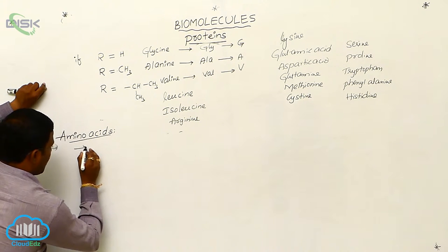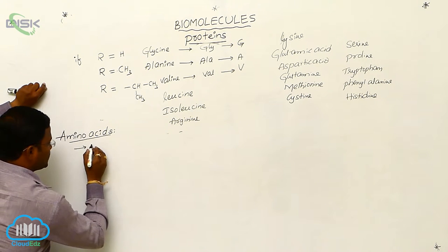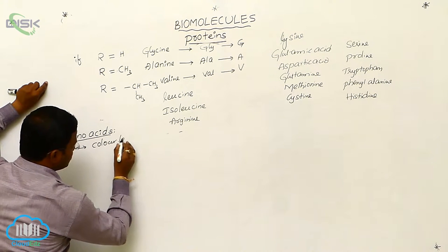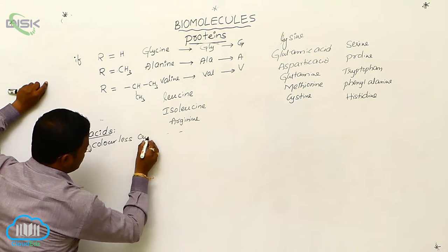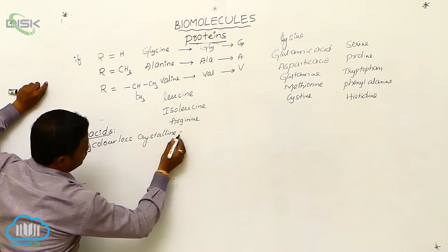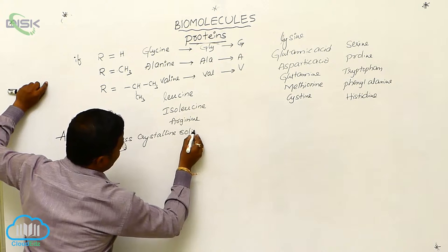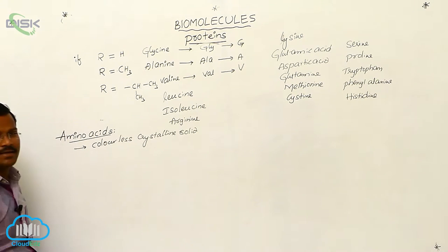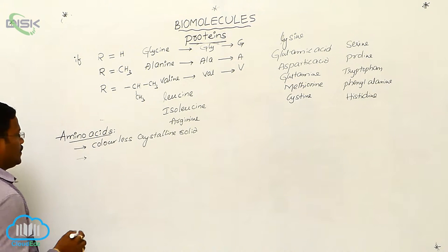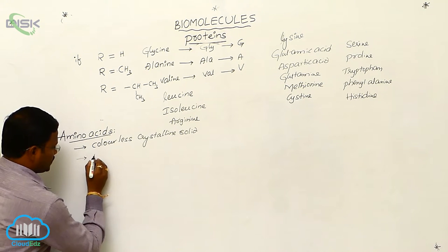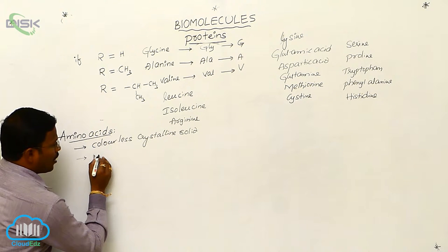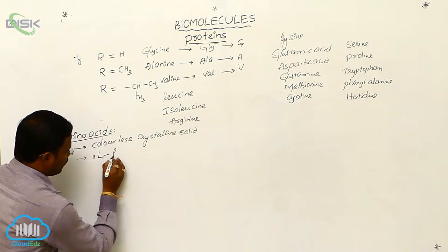All amino acids are available in colorless crystalline solid form. Additionally, all naturally available amino acids are present in the L-form only.